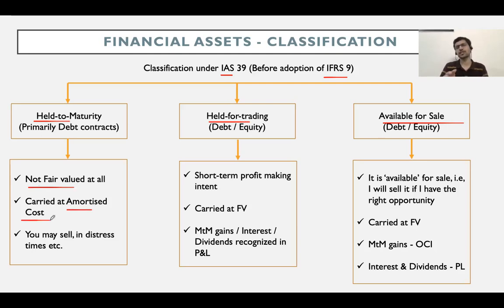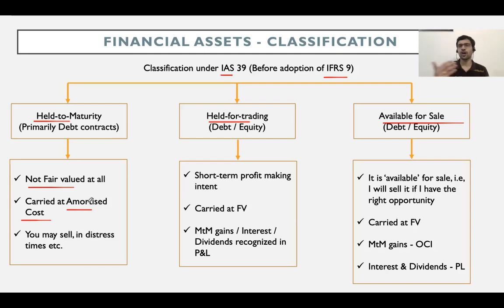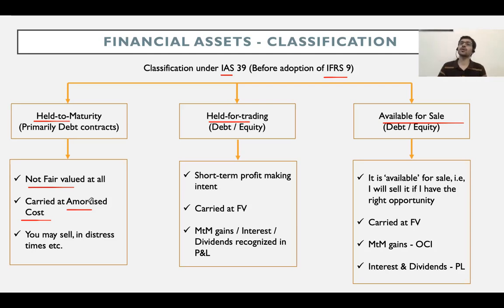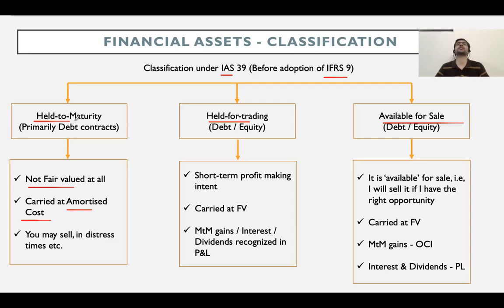All you are bothered about is the interest and the principal that you are going to receive. Therefore, held-to-maturity instruments were never fair valued at all. They were carried on the balance sheet at something called amortized cost. Amortized cost is similar in concept to historical cost — you purchased it at one price and continue to show the asset at that same price, without doing a fair valuation on the balance sheet.